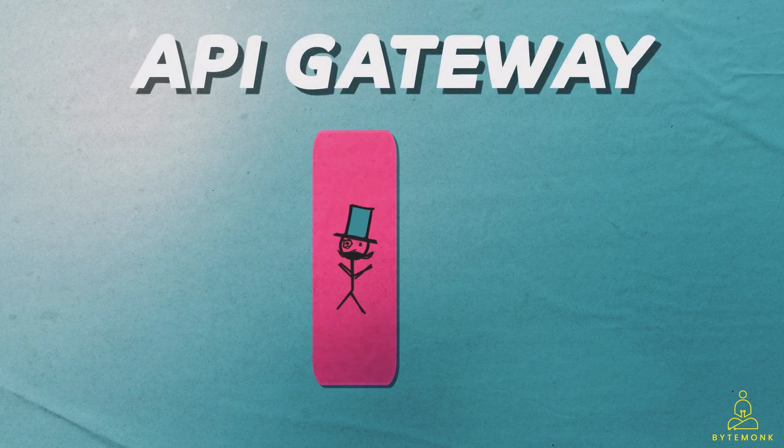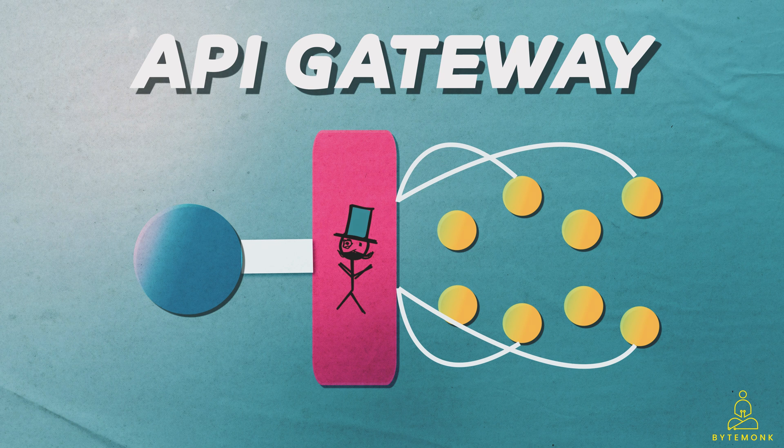An API Gateway is like a middleman between a client like your phone or computer and a bunch of other computer programs that do stuff in the background.